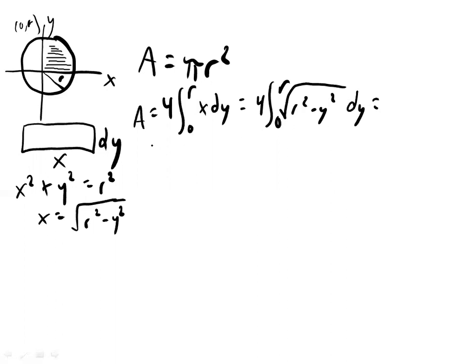And now just using an online integral solver, we can evaluate this. And this integral turns out to be pretty complicated looking. It's 1 half y times square root r squared minus y squared plus 1 half r squared times the tangent inverse of y over square root r squared minus y squared.